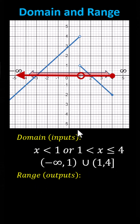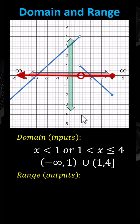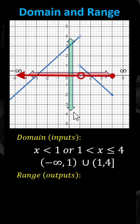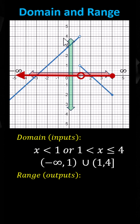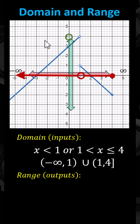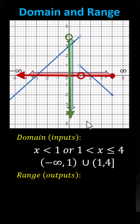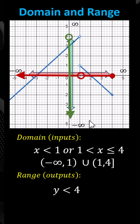To determine the range, we analyze the graph vertically. The highest point on the graph is an open point where y equals 4. Because of the open point, y equals 4 is not in the range. From there, the graph goes down indefinitely and y approaches negative infinity. The range is y less than 4.